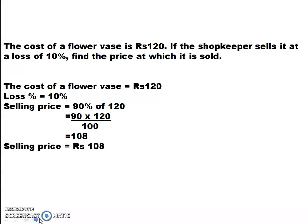The cost of a flower vase is Rs. 120. If the shopkeeper sells it at a loss of 10%, find the price at which it is sold. The cost price of the flower vase is given as Rs. 120, but the shopkeeper suffered a loss of 10%. Students, do you remember what loss is similar to?